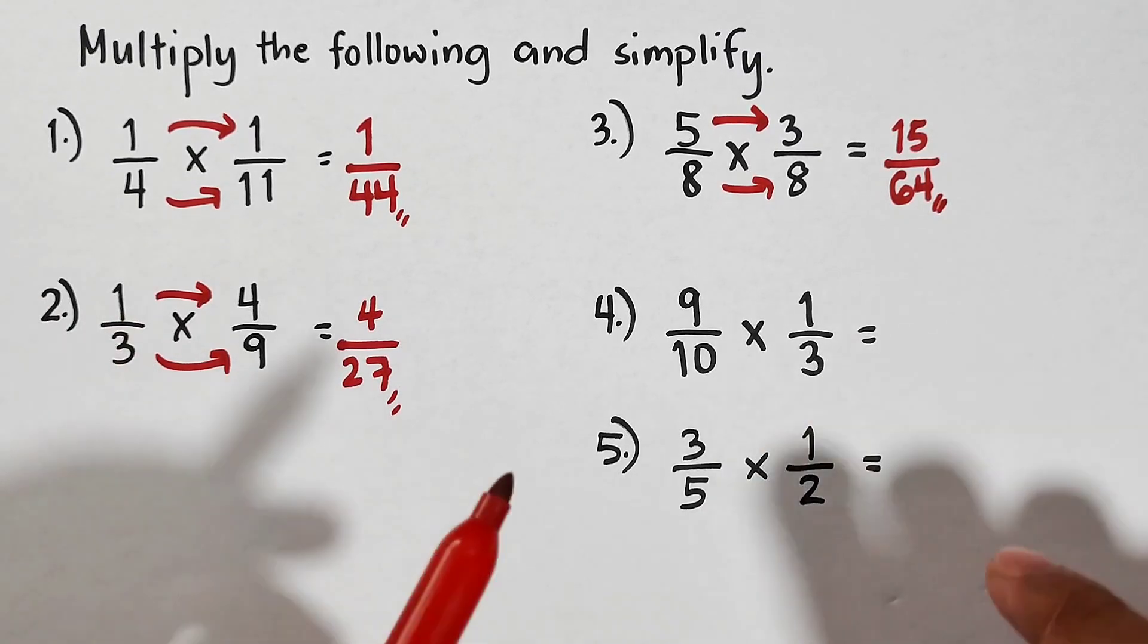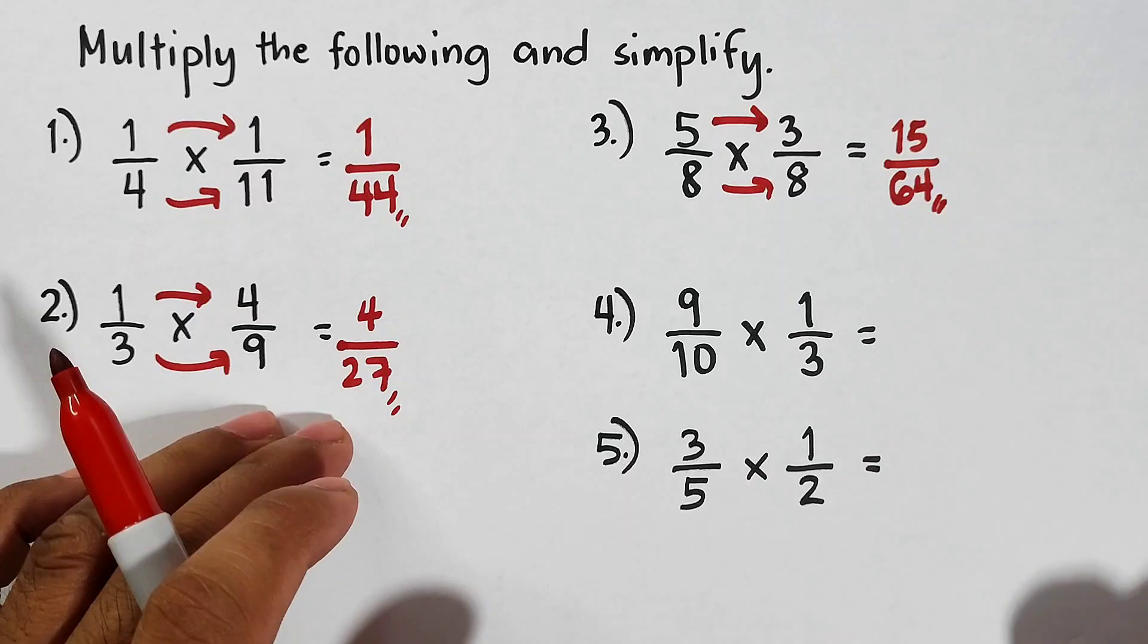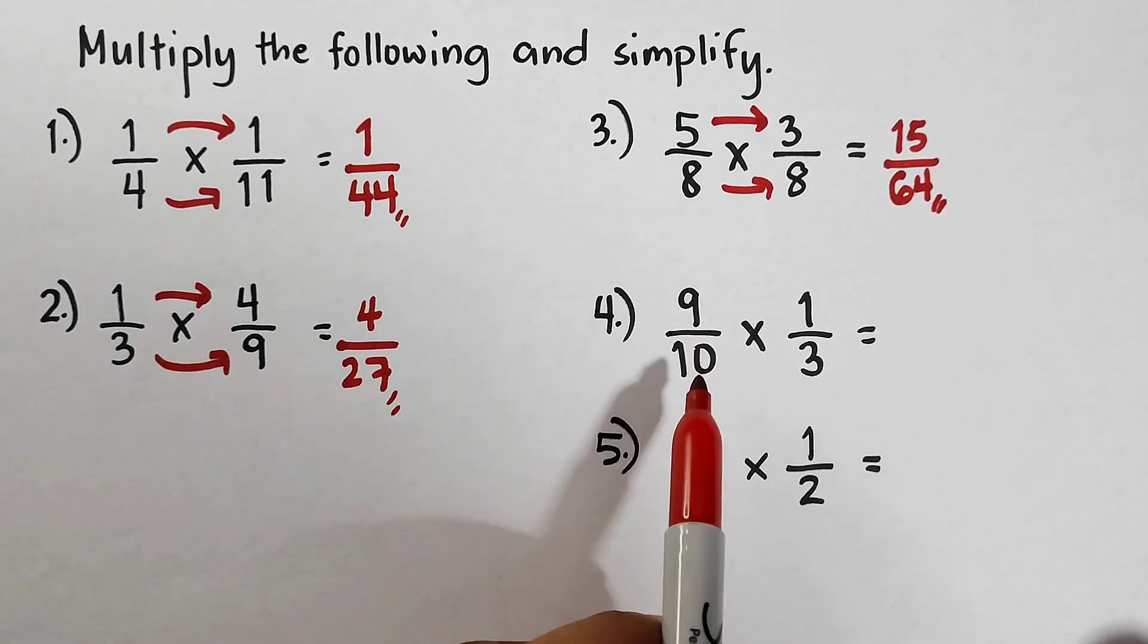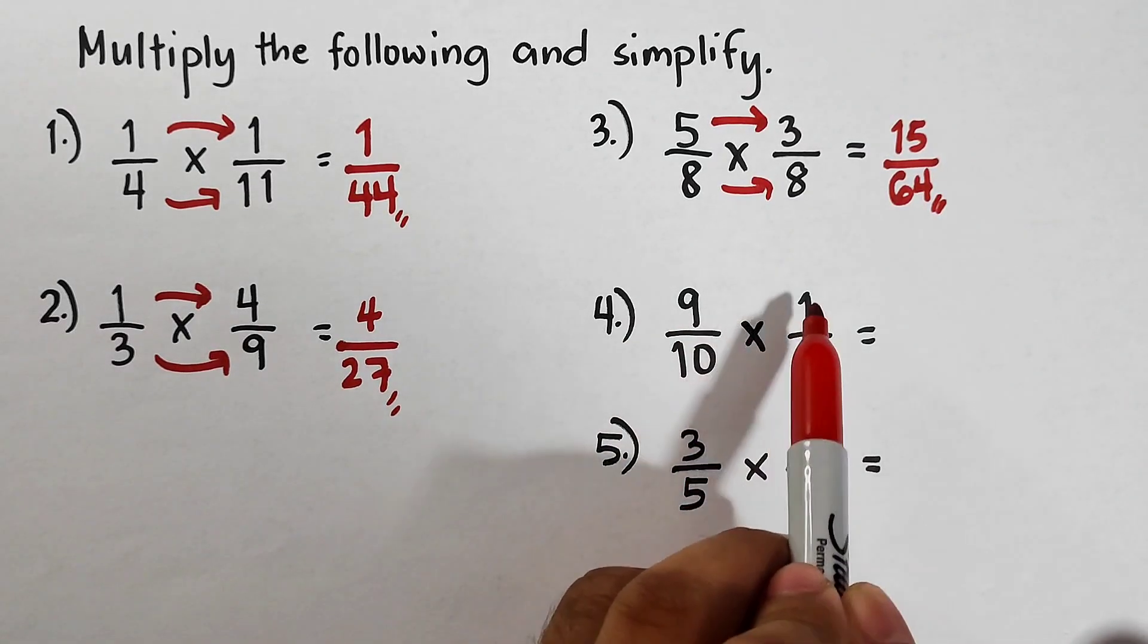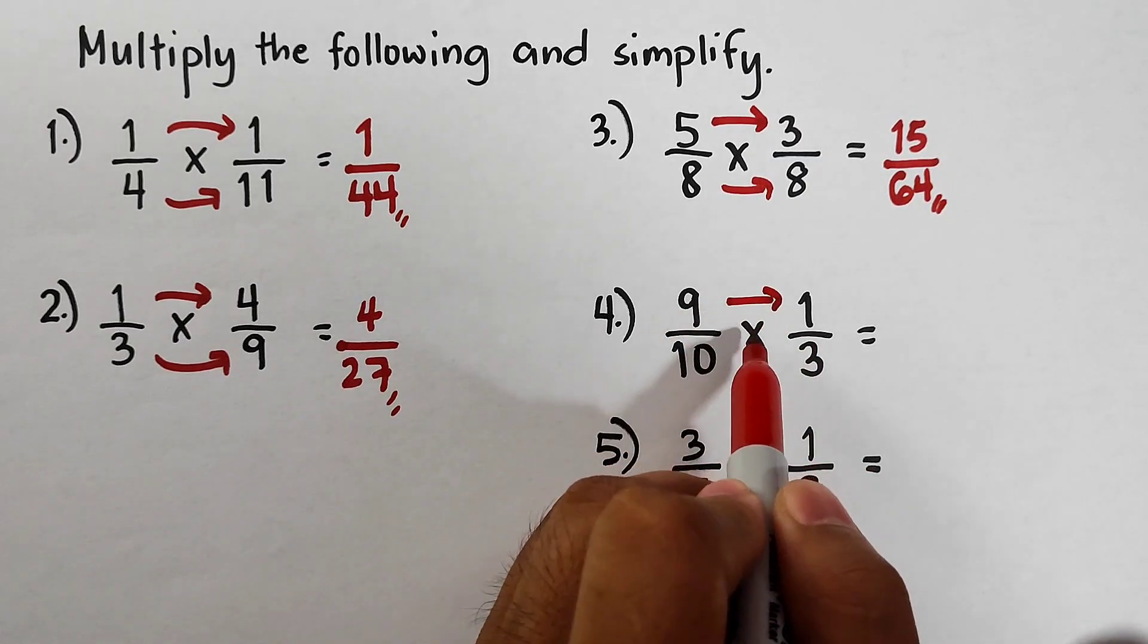As you can see, we're right now at item number four. These items are very easy, so let's continue. We have 9/10 times 1/3. Multiply the numerators: 9 times 1 is 9.